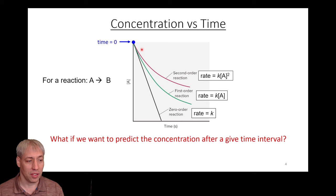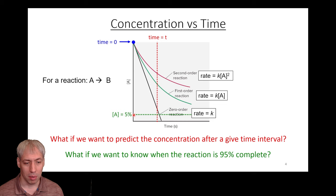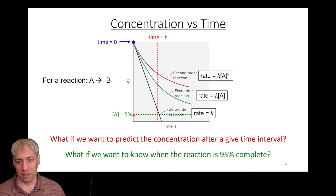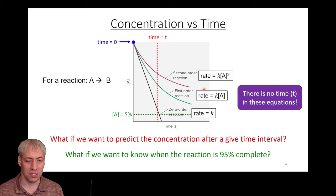What if we want to predict the concentration at a given time interval? Let's say we start at time zero and we want to know at time t how much concentration there's going to be. Or what if we want to know when the reaction is 95% complete — when you started at maximum concentration, when does it go down to only 5% of A remaining? These are really important for predicting reactions. If you're a chemical engineer and you want to know how long it will take to make a certain amount of product, it's going to depend on the rate of the reaction. But there's a problem: there's no time variable t in these rate equations, so we can't solve for t using them directly.